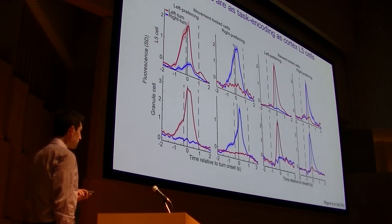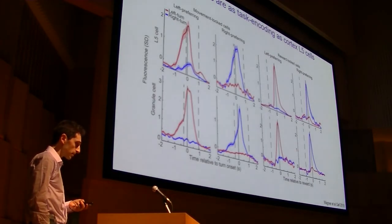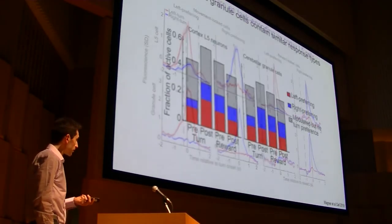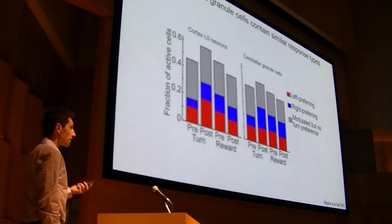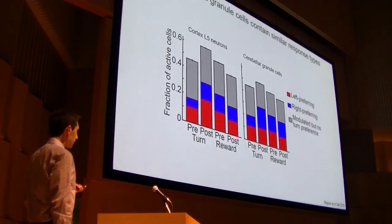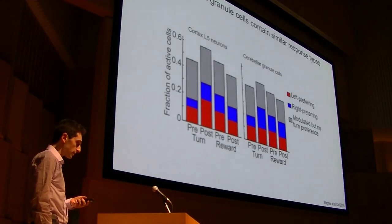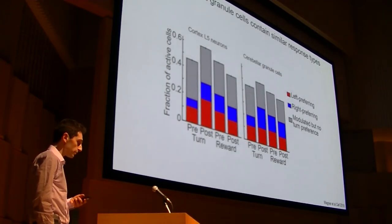And we found that in the granule cell layer, you find various similar sorts of canonical response properties. And when we used linear regression analysis to just sort of quantify the prevalence of these different types of selectivities, pre- and post-movement, pre- and post-reward, preferred left-turns, preferred right-turns, and so forth, there was really no major difference in the sort of degree and prevalence of selectivity.